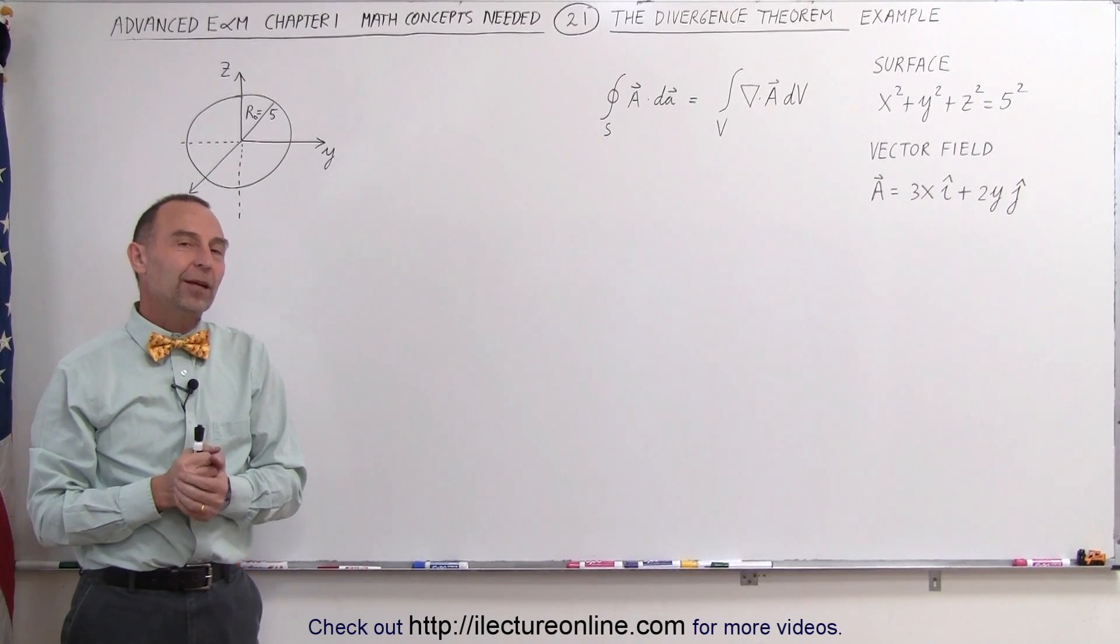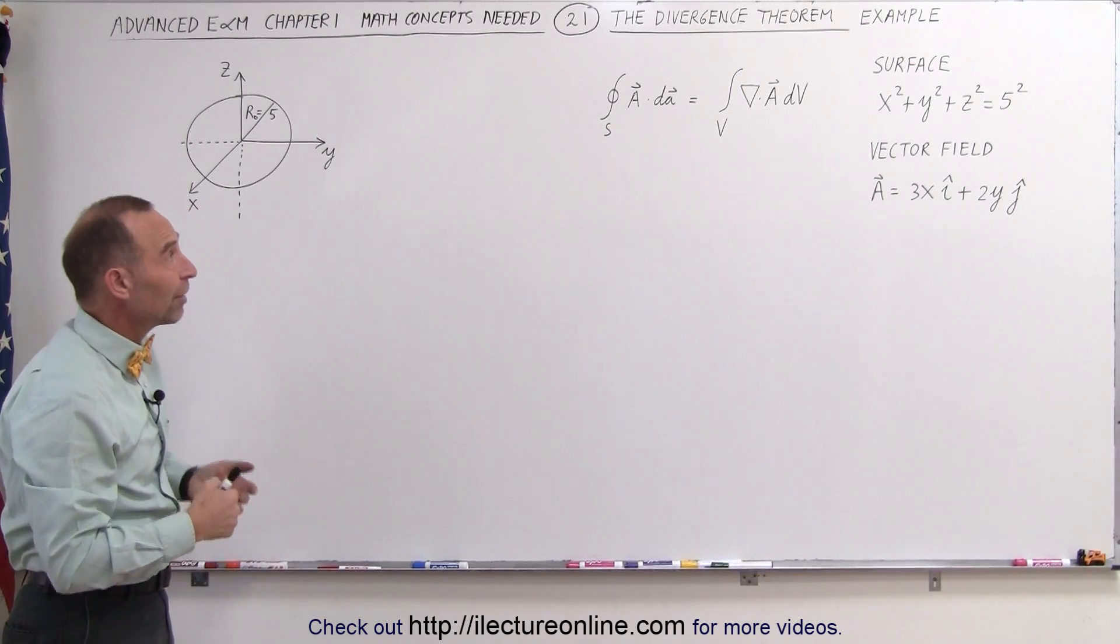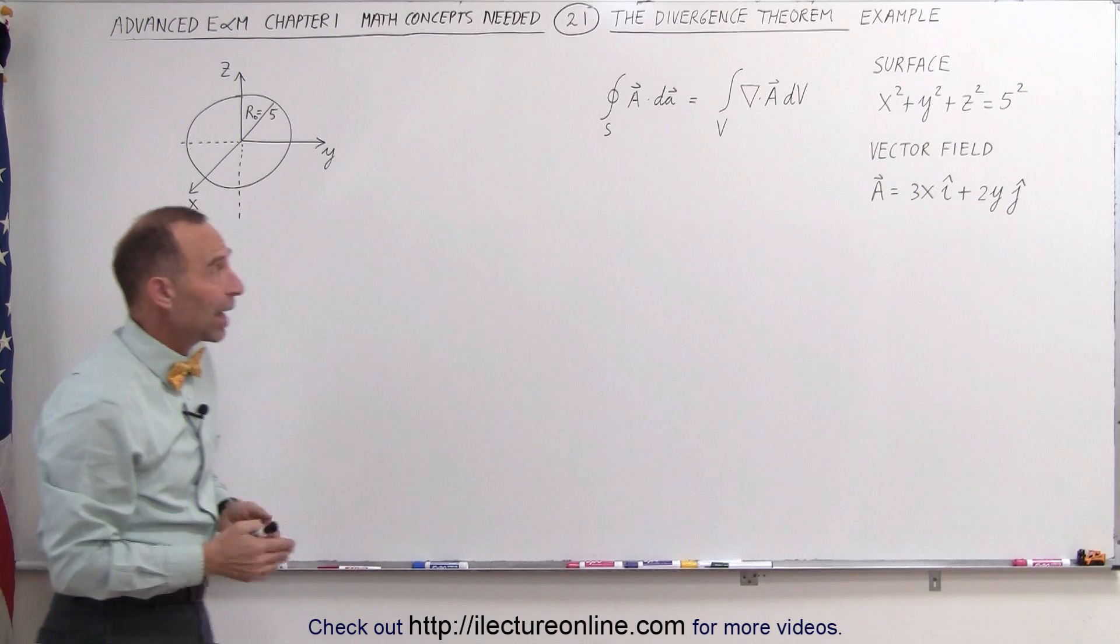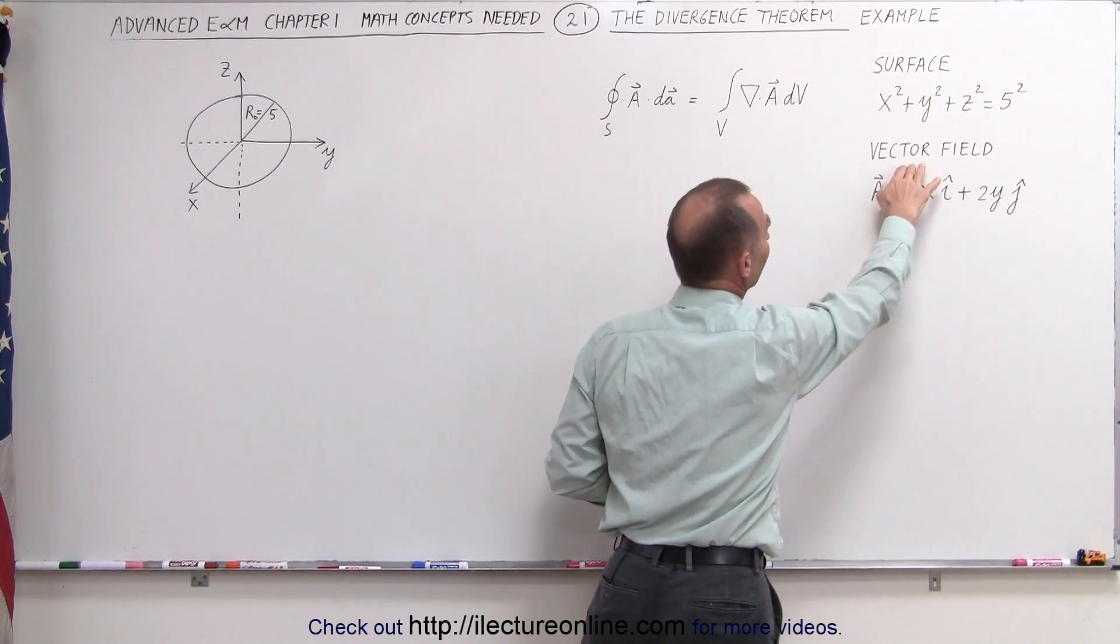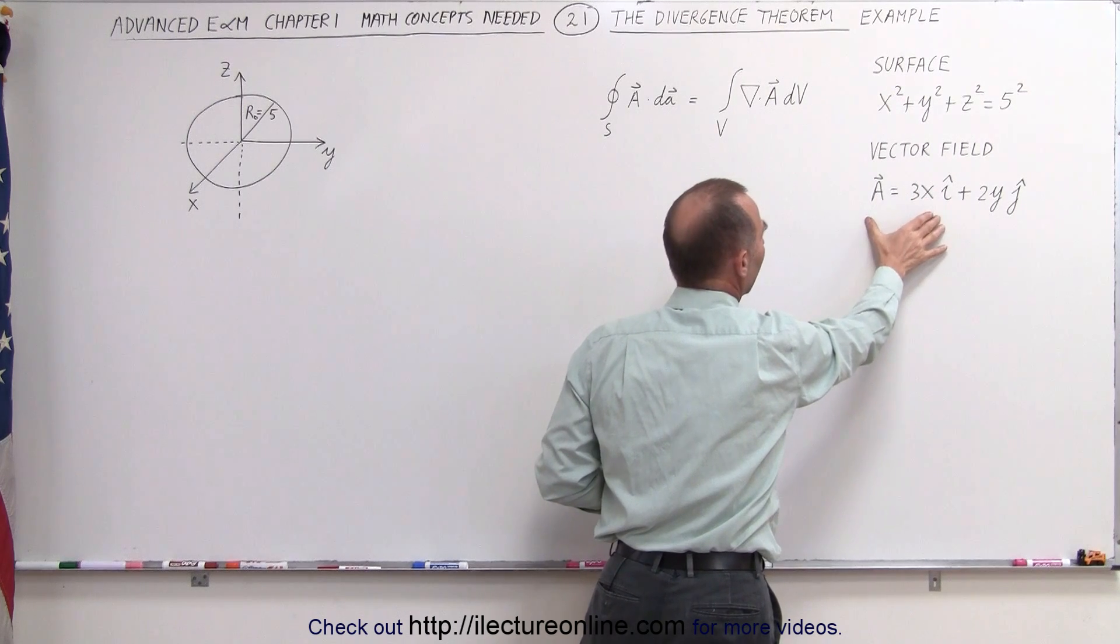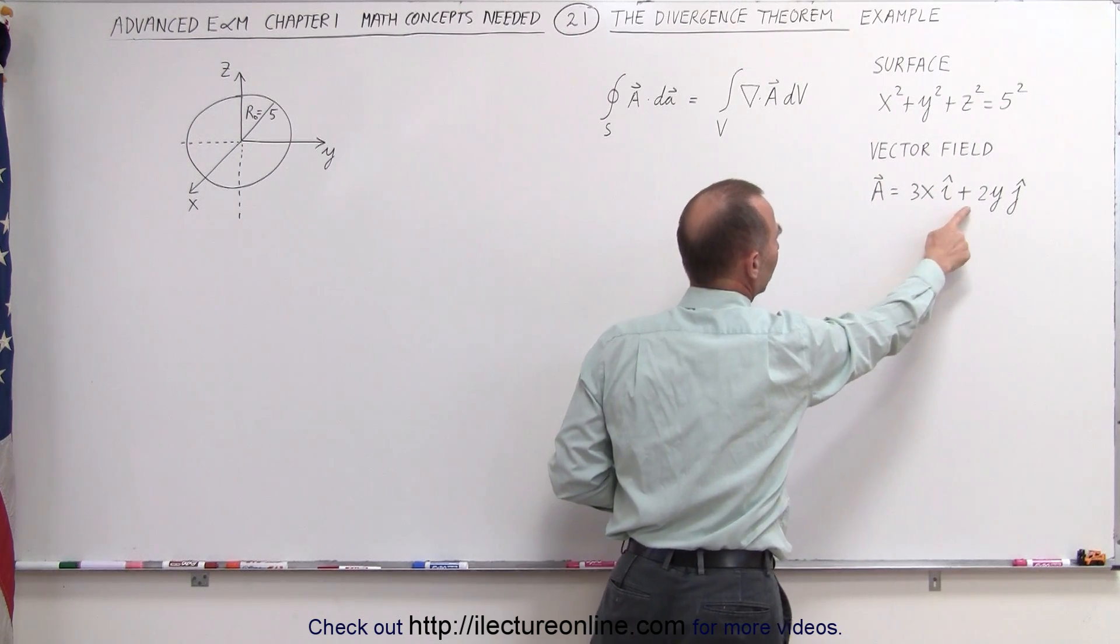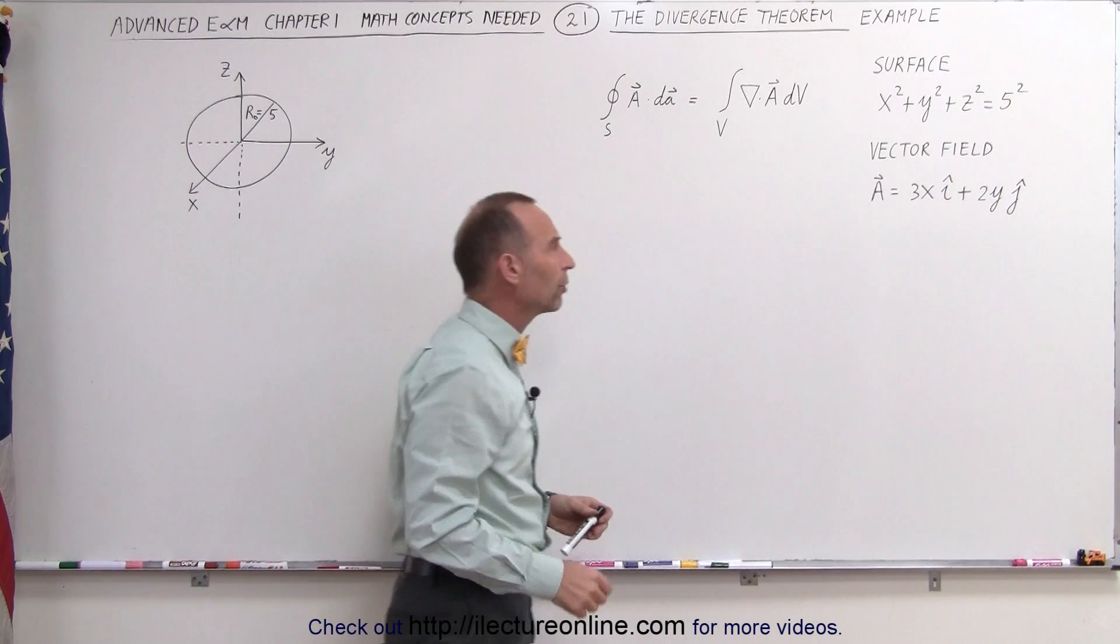Welcome to ElectronLine. Here's a nice example of how to use the divergence theorem. Let's say that we have a surface, the surface of a sphere, radius 5, and a vector field defined right here. A is equal to 3x in the x direction plus 2y in the y direction.